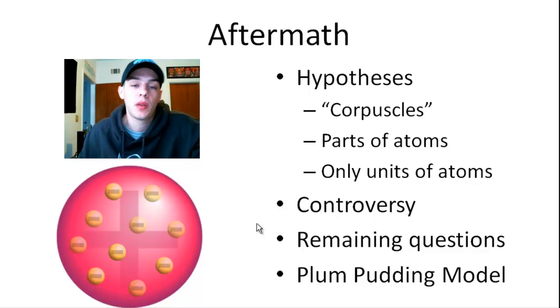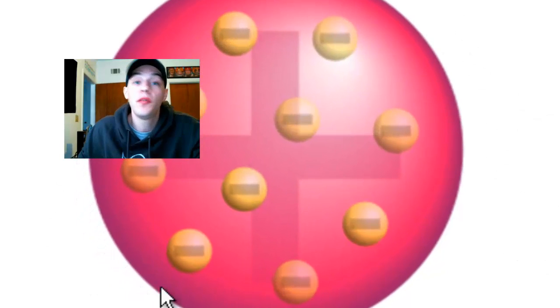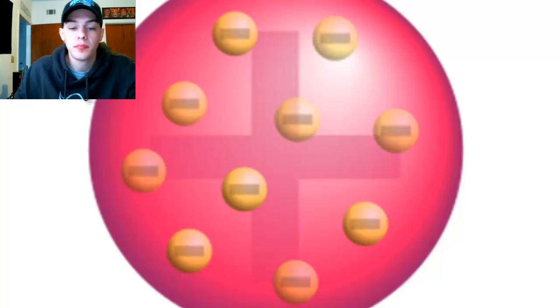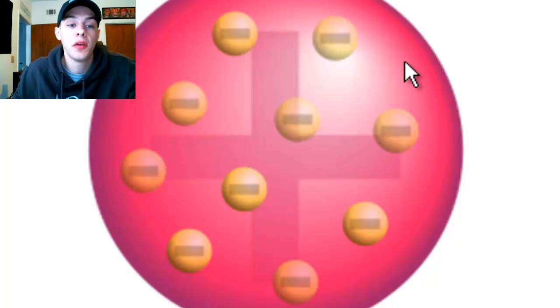And from this, Thompson was able to suggest a model of the atom which he called the plum pudding model. And basically, under this model, you have a sphere of positive charge in which many electrons are embedded. So this plum pudding model is what JJ Thompson hypothesized. And as we will see in a video very, very soon, he actually turned out to be incorrect, and it was his own student that actually proved him wrong.